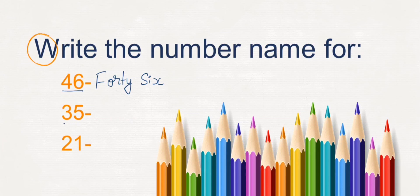What is this number? 35. What is the spelling of 30? T, H, I, R, T, Y. And 35: F, I, V, E.